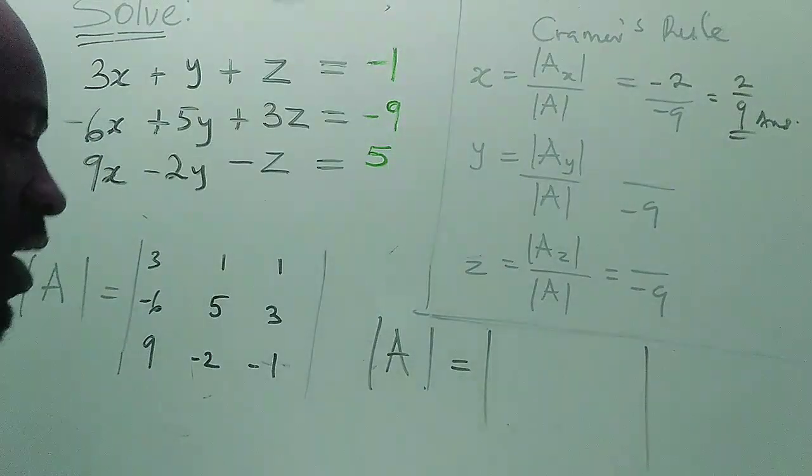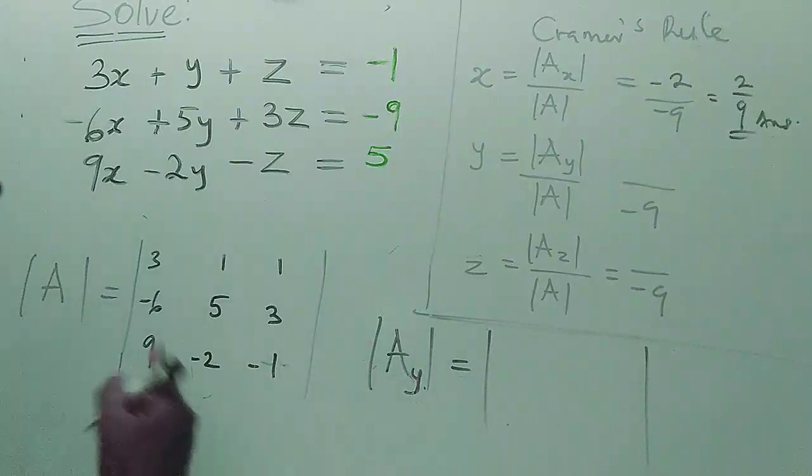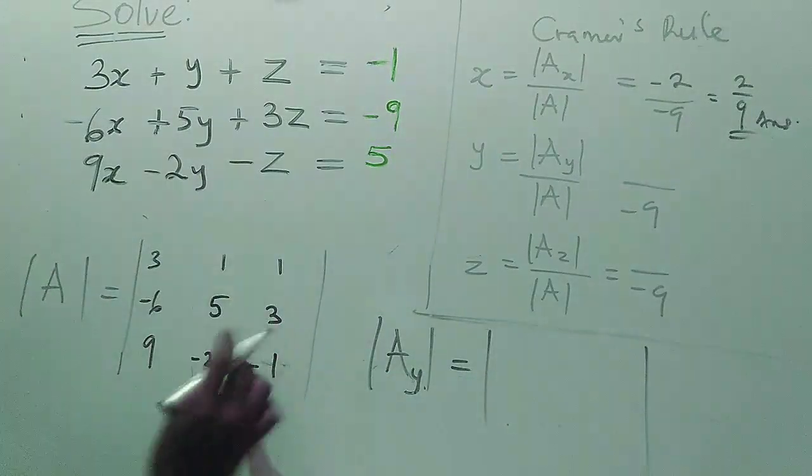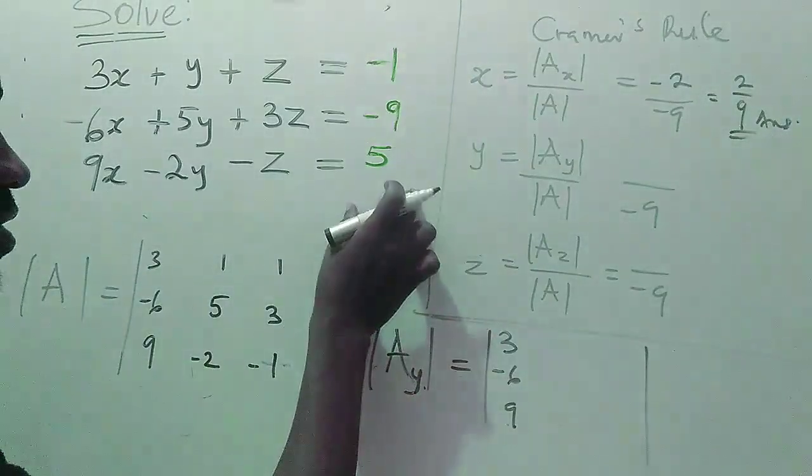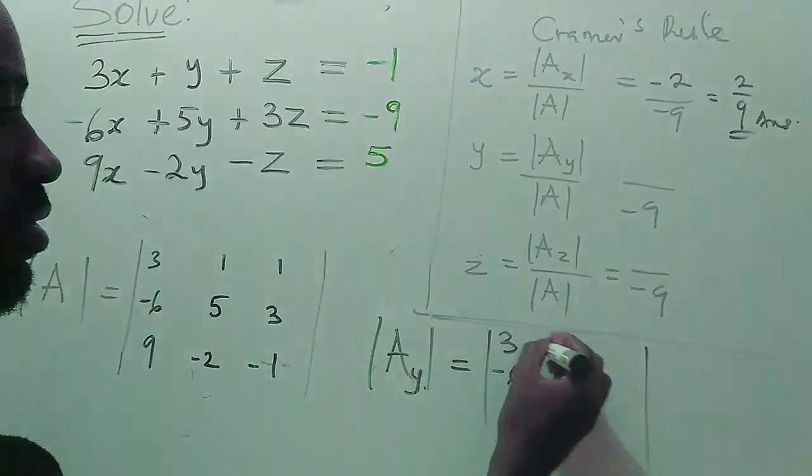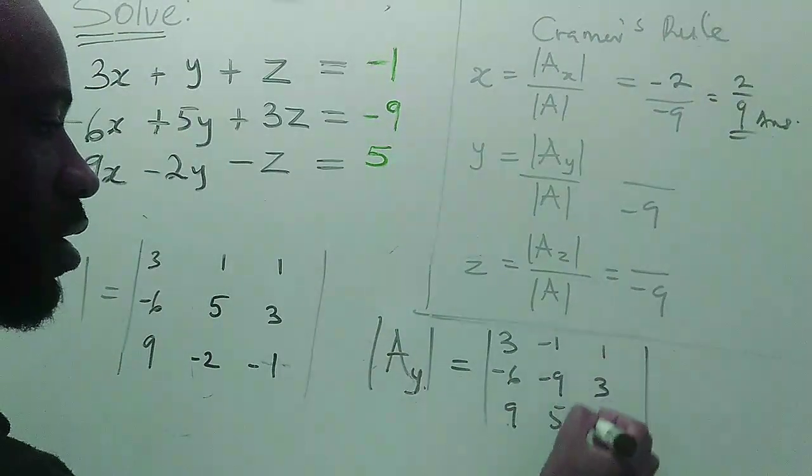To get Ay, we do the same thing. Y is the second column, so we are going to replace our second column here with this constant on green minus one, minus nine, five. You put back this one, three, one.